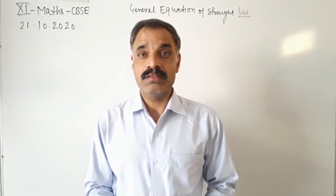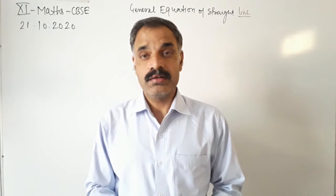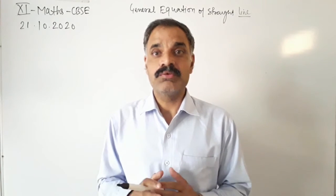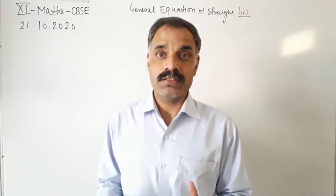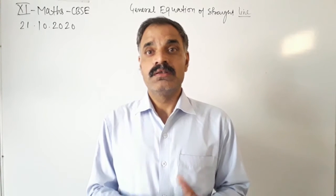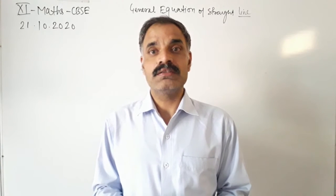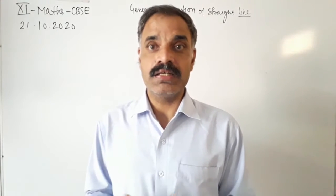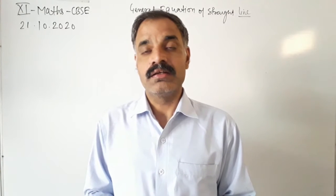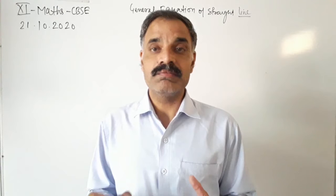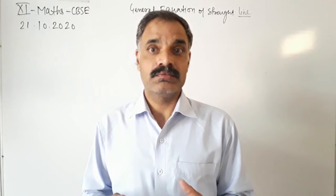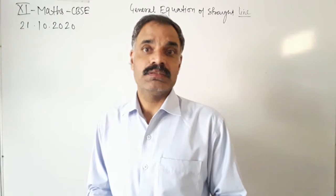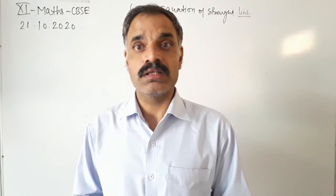Okay students, Class 11th Mathematics CBSE. Today we will study about the general equation of the straight line. We will convert this in different forms — that is slope-intercept form, intercept form — and we will also convert this in the normal form of the equation of the line. After that we will find the distance of a point from the general equation of the line, and lastly we will find the distance between two parallel lines. So today's focus of the study is on the general equation of the line.